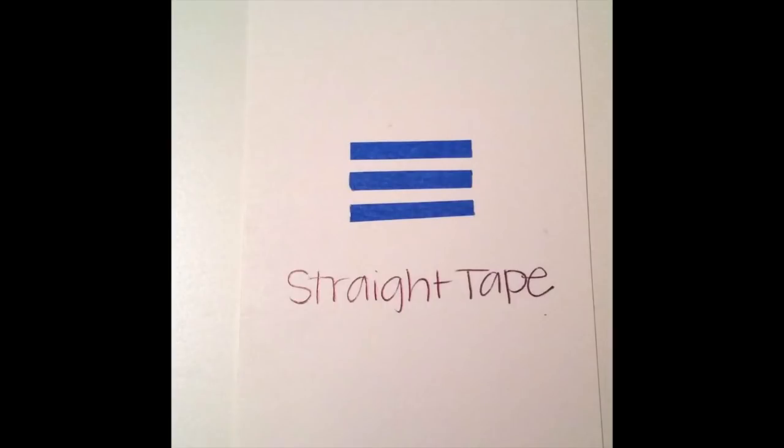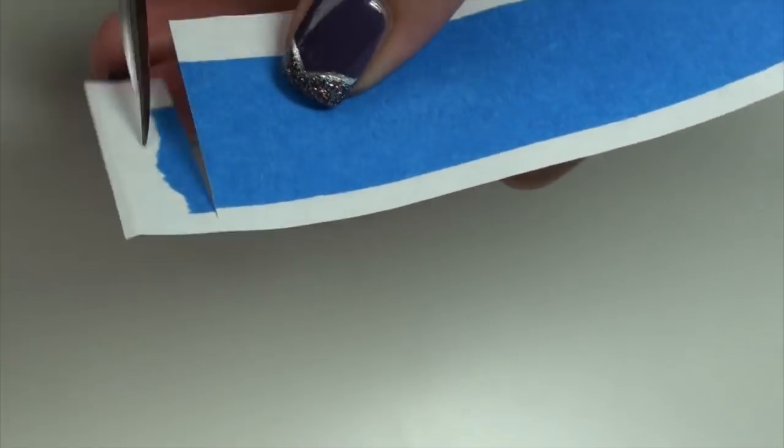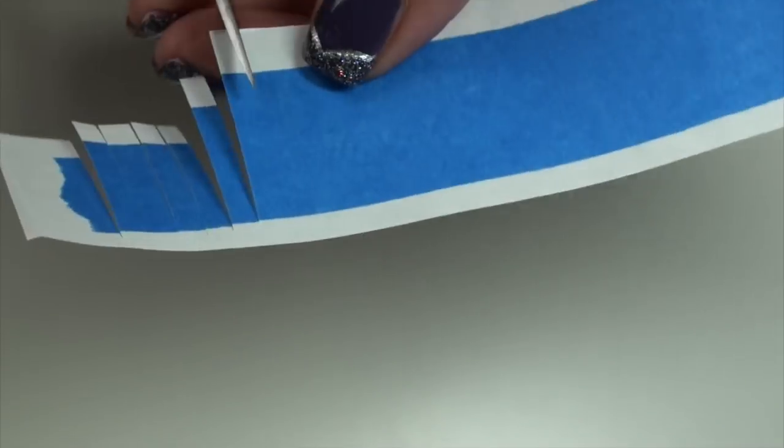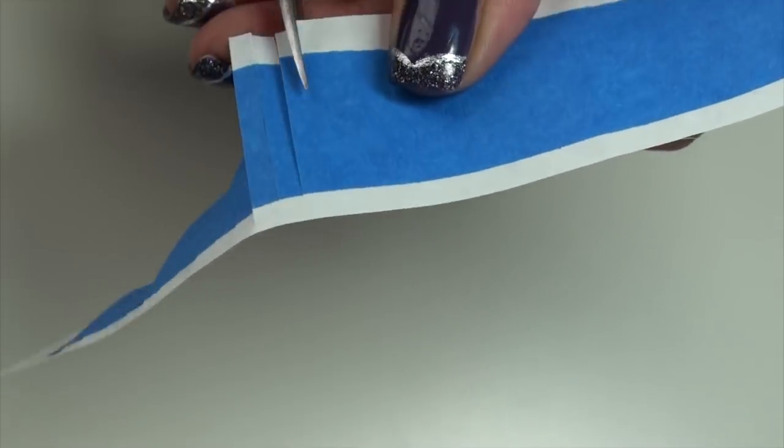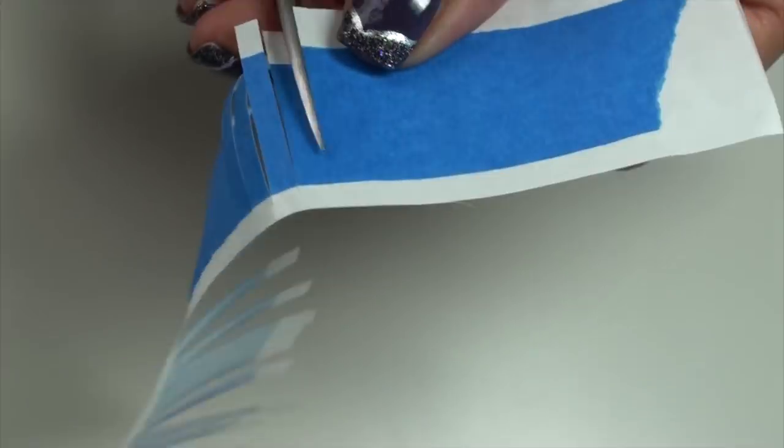Okay, so here you can see two out of the three stencil designs. Next up is straight tape. This one's actually really easy. You're going to take that third piece of the painter's tape and you're just going to cut little parallel lines, making sure you're not cutting completely through the freezer paper. And you can make them whatever width you like. Just cut all along until you reach the end.